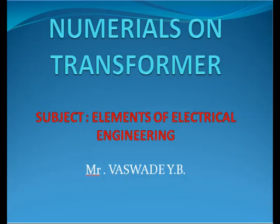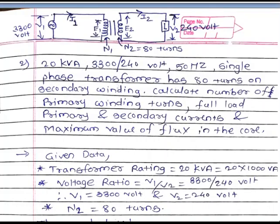Welcome all of you. Today we are discussing numericals based on the transformer. Numerical number 2: a 20 KVA, 3300 by 240 volt, 50 Hz single phase transformer has 80 turns on the secondary winding. Calculate the number of primary winding turns, full load primary and secondary currents, and maximum value of flux in the core.